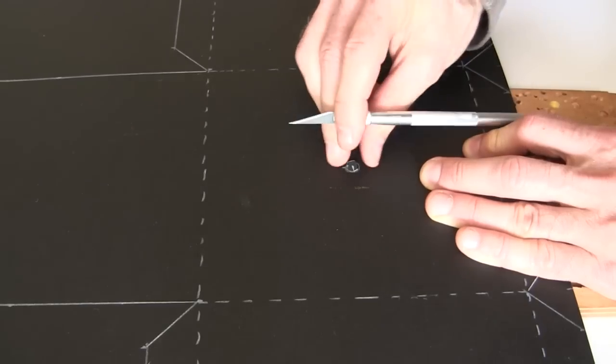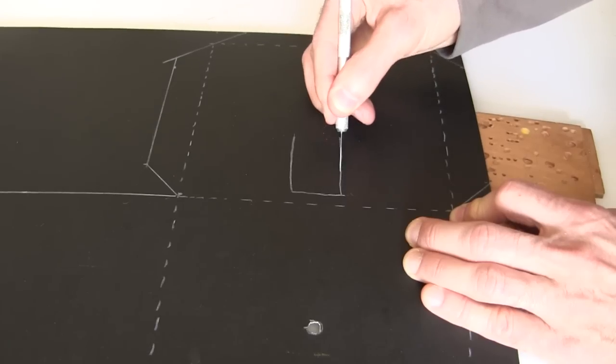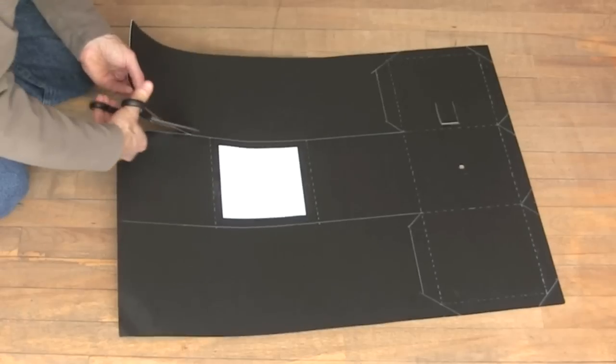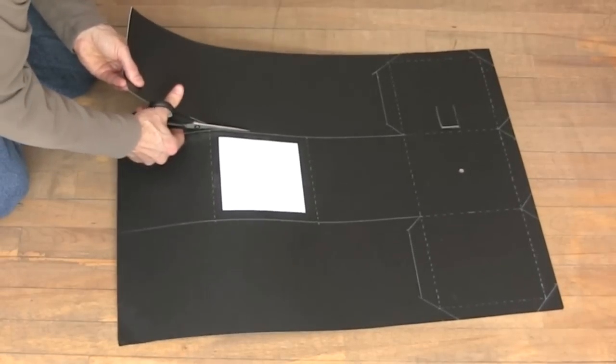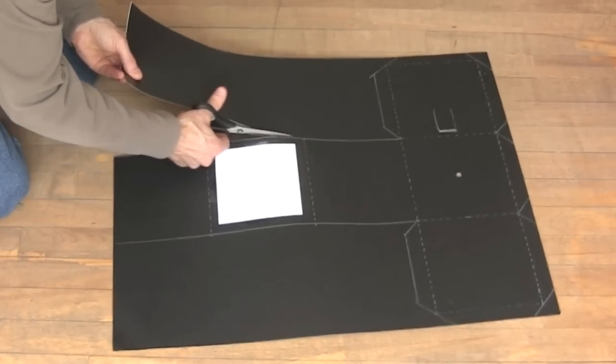I also cut out the circle I'd drawn for the aperture and I cut out the viewfinder. We're now ready to cut it from the poster board. Remember to cut only the solid lines.